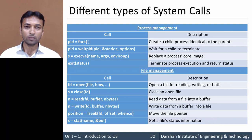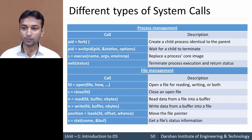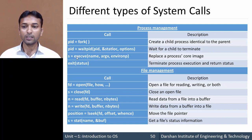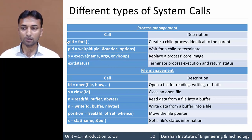Next is process management — these are the system calls used for process management. First is fork, used to create a child process that is identical to the parent process. Second is waitpid, used to wait for a child to terminate its execution. Then execve, which replaces the parent's core image in the system. And last is exit, which terminates the process execution and returns the status.